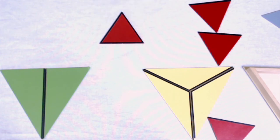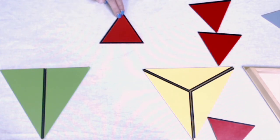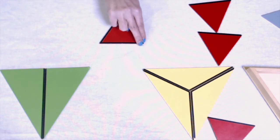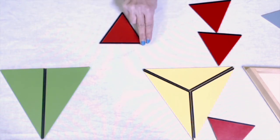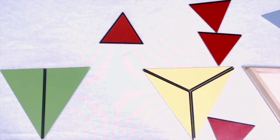This is an equilateral triangle. The sides — one, two, three — and the angles — one, two, three — are equal.